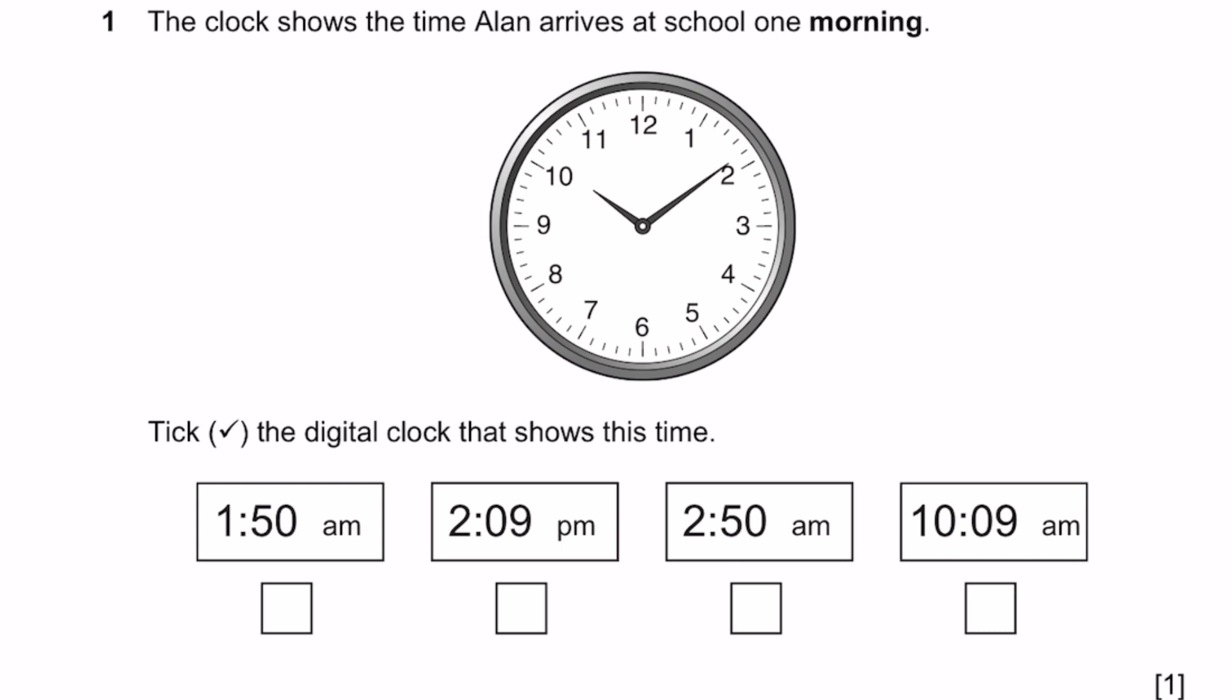Question 1. The clock shows the time Alan arrives at school one morning. Tick the digital clock that shows this time. So as you can see, it's 10, and over here it points just before 2, which means 10:09. So the answer is the fourth option.